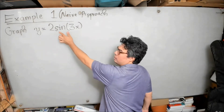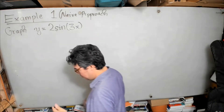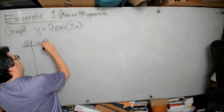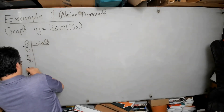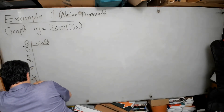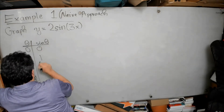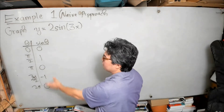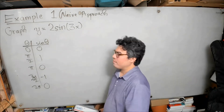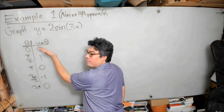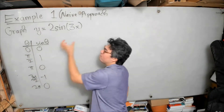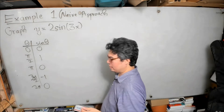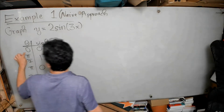We're doing a sine graph. The naive technique works like this: we take our table of known values for sine theta — our main landmark values — and since we know the sine values are very nice at those angles, we ask: what if I set 3x equal to those angles so I can get those nice sine values? That's the idea of the naive technique.